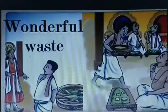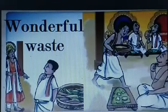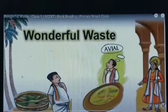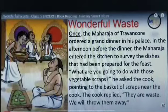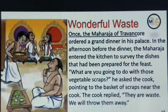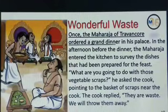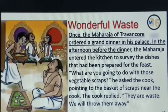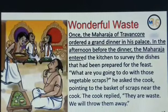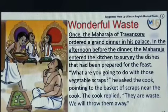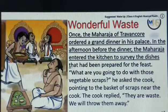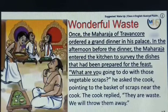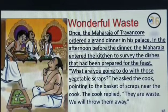Let us begin the reading of Lesson No. 1 from Unit 1. The title of the story is Wonderful Waste. Once the Maharaja of Dravan Gaur ordered a grand dinner in his palace. In the afternoon before the dinner, the Maharaja entered the kitchen to survey the dishes that had been prepared for the feast.